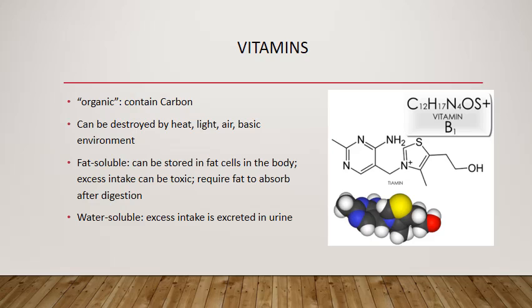Looking at the micronutrients — vitamins are considered organic molecules because all vitamins contain carbon, just like carbohydrates, fats, and proteins. Scientifically, 'organic' is defined as containing the carbon element. Because they contain carbon, vitamins can be destroyed or disfigured by heat — like cooking at high temperatures — by exposure to light, air, or an alkaline environment. All of these things can disfigure the structure of the vitamin, rendering them useless. We further classify vitamins as fat-soluble and water-soluble. Fat-soluble vitamins can be stored in fat cells; taking in too much can become toxic, and they require fat to be absorbed. Water-soluble vitamins — if we take in too much, we simply excrete the excess in urine.